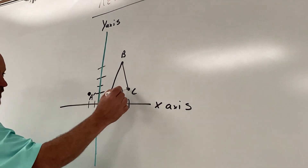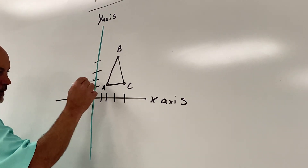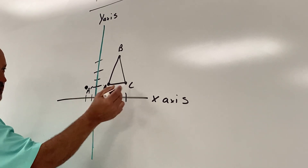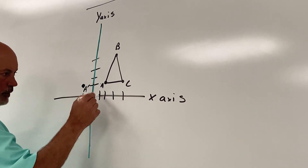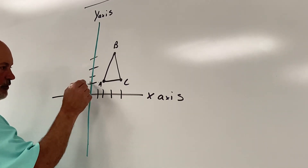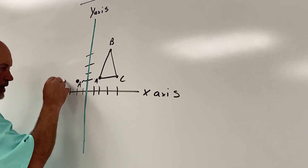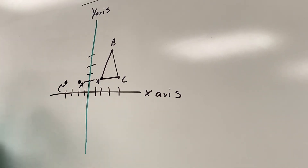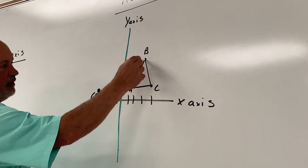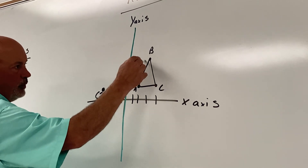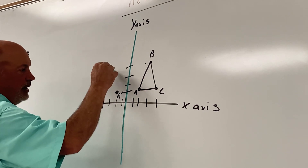How far is C from the y-axis? Four. One, two, three, four — so count four to the left. One, two, three, four. C prime goes over here. Now let's count B: how far is B from the y-axis? Three. So go three — one, two, three. B prime should be right here.